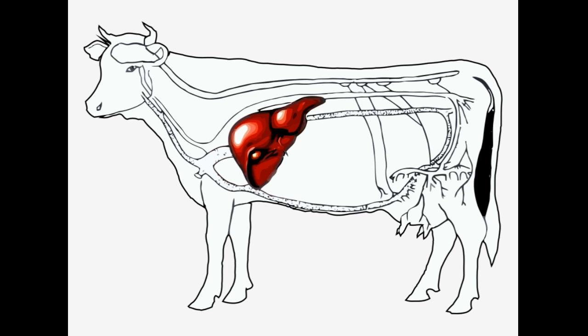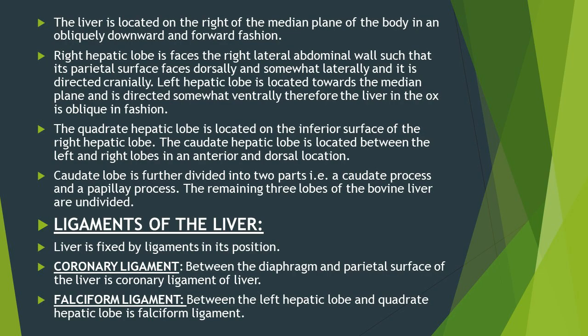The left hepatic lobe is located towards the median plane and directed somewhat ventrally, and therefore the liver of the ox is present in an oblique fashion inside the abdominal cavity. The parietal surface of the right hepatic lobe is present dorsolaterally while the left hepatic lobe is directed somewhat ventrally.